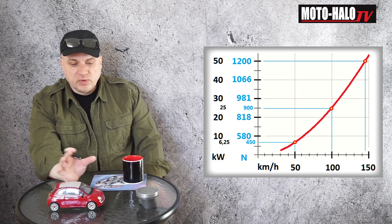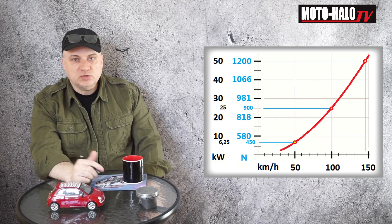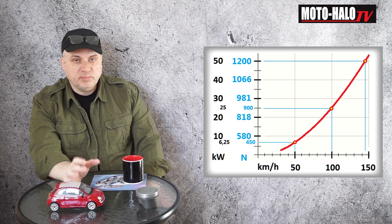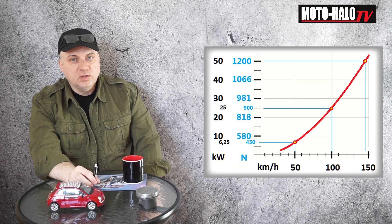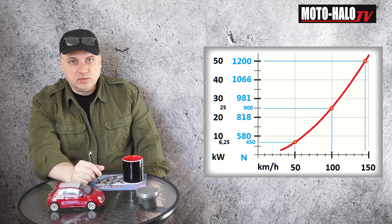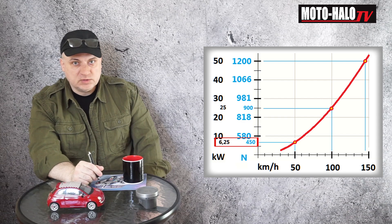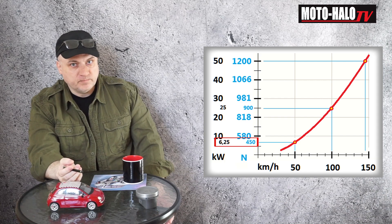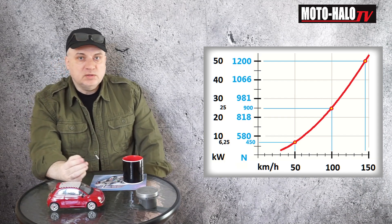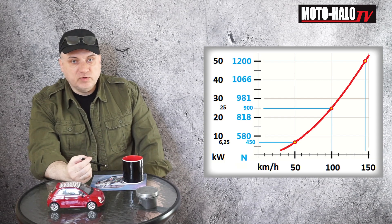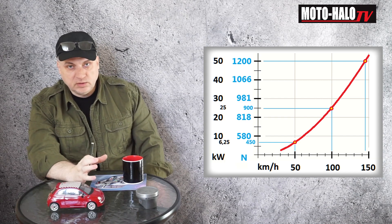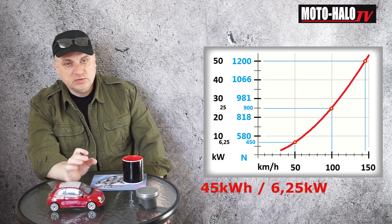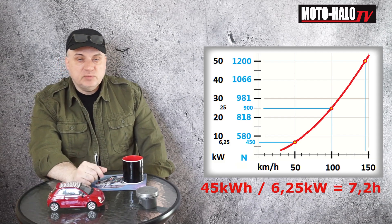Now we are ready to connect the required energy to the achievable range of the vehicle. Let's take as an example a battery with a capacity of 45 kilowatt-hours. For a speed of 50 kilometers an hour, we need 6.25 kilowatts of power delivered to the wheels to make it happen. So now we can divide the available 45 kilowatt-hours stored in the battery by the 6.25 kilowatts needed to achieve that speed.